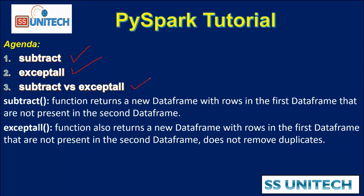So what does the subtract function do? The subtract function returns a new dataframe with rows in the first dataframe that are not present in the second dataframe. This is something like the NOT IN operator in SQL Server — it selects all rows from the first dataframe that are not available in the second dataframe.